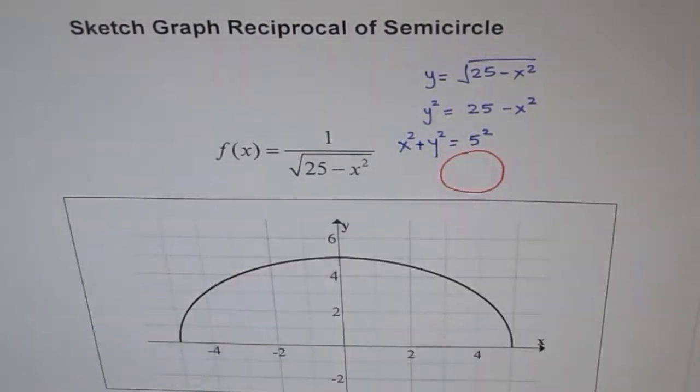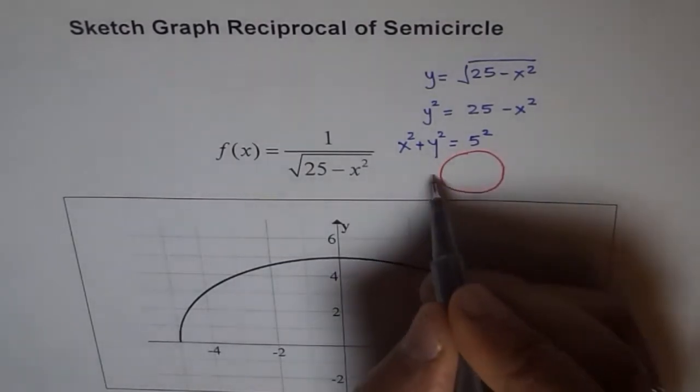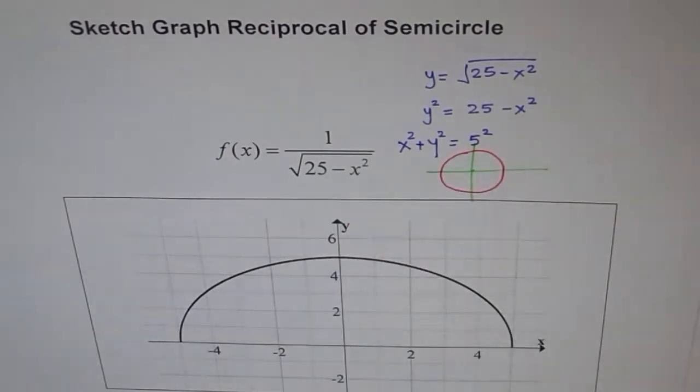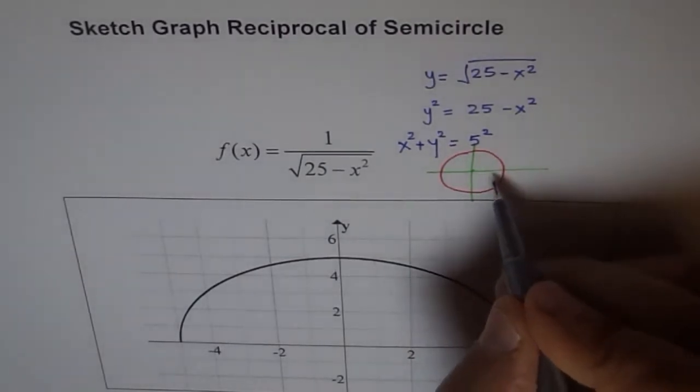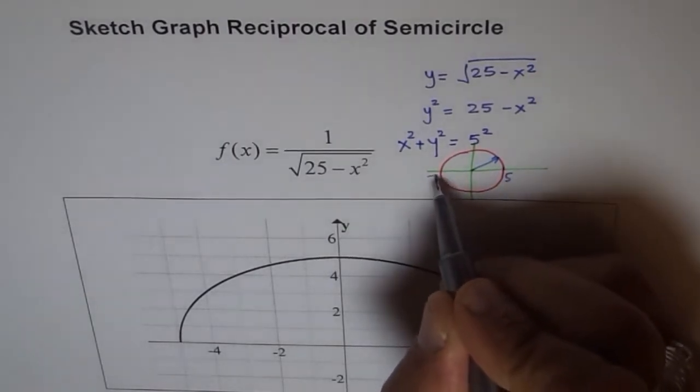X square plus y square equals 5 square is equation of a circle with center at origin and radius of 5 units. This is 5, and this is minus 5.